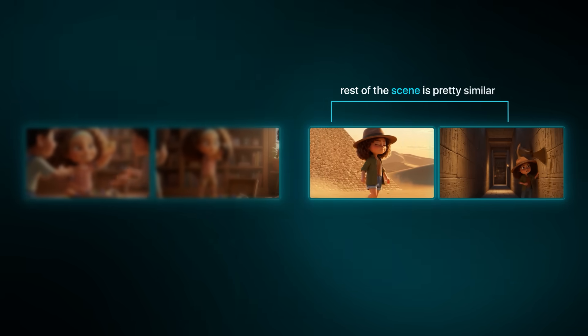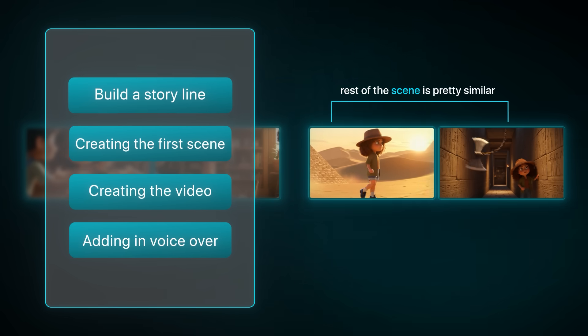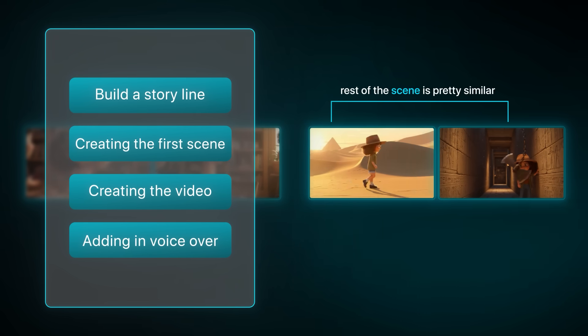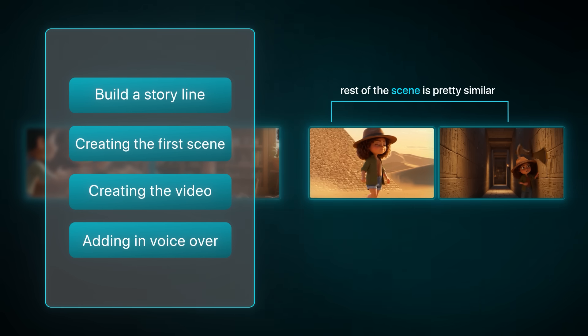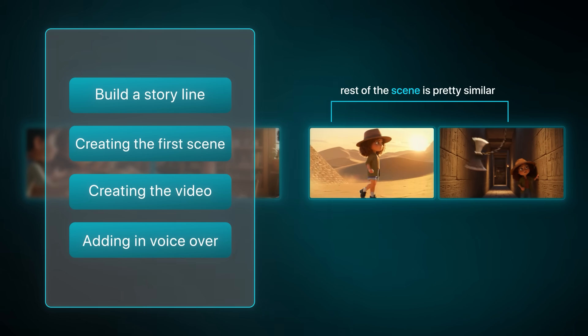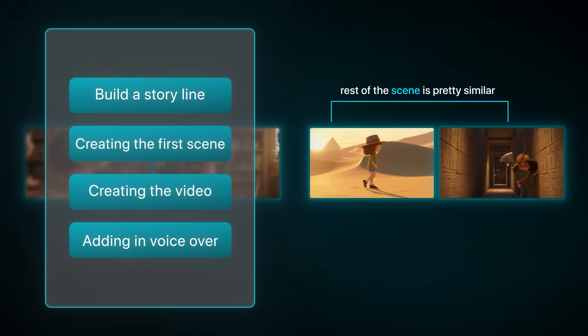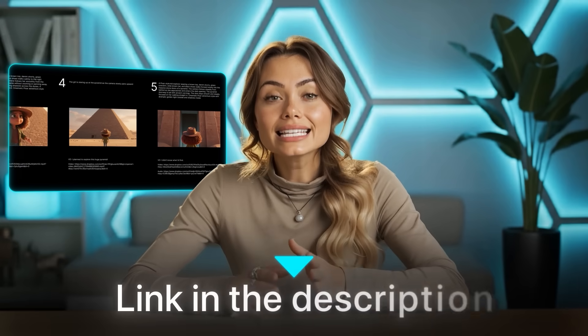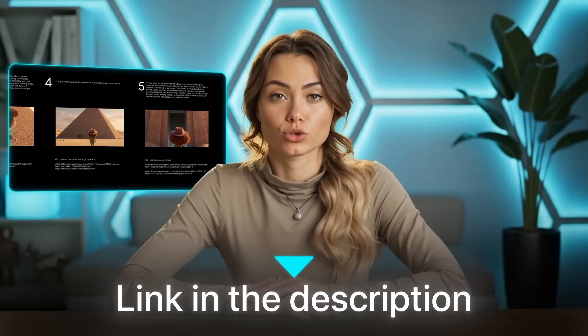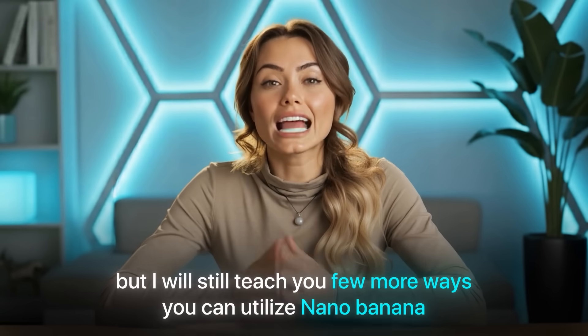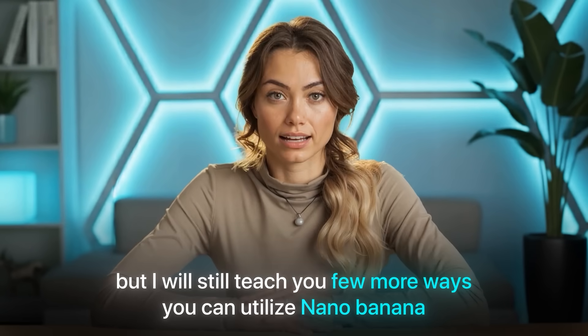The rest of the scenes follow a similar process: get an idea, generate the first frame, animate it using Kling 2.5, and then add voice lines or sound effects from ElevenLabs. If you want to see my full animation workflow, the link is in the description. But I'll also show you a few more ways you can use Nano Banana.